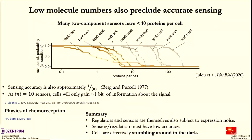The summary is that regulators and sensors are themselves subject to expression noise, making it even more variable. The sensing and regulation that individual cells do must have low accuracy. The picture I get is that cells are effectively stumbling around in the dark with relatively little information about where they are.